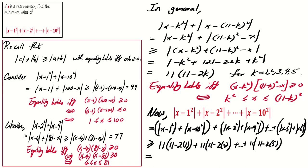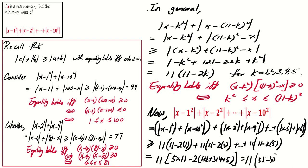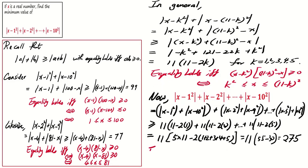Proceeding with the calculation, this equals 11 times (11 - 2 times (1 + 2 + 3 + 4 + 5)). From direct calculation, we get the answer equals 275. Note that the equality holds if and only if x is in between k² and (11-k)² for all k.